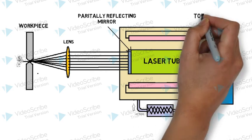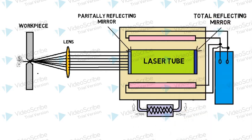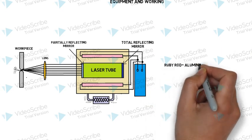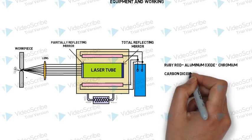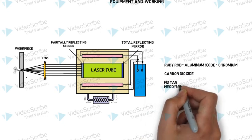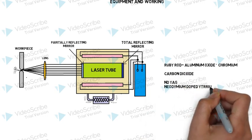This laser material can be of different type. One is ruby rod, which is aluminum oxide with addition of chromium, or carbon dioxide filled laser tube, or Nd:YAG, which is neodymium doped yttrium aluminum garnet.